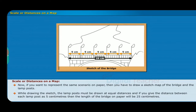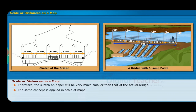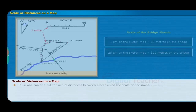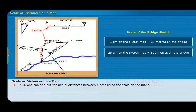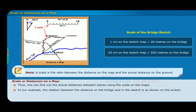If you give the distance between each lamp post as 5 centimeters on paper, then the length of the bridge on paper will be 25 centimeters. Therefore, the sketch on paper will be much smaller than the actual bridge. The same concept is applied in the scale of maps. Scale is used to show the actual distance on the ground in a reduced manner on a map, and one can find the actual distances between places using the scale. The scale is the ratio between the distance on the map and the actual distance on the ground.